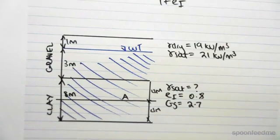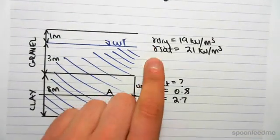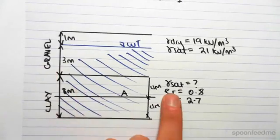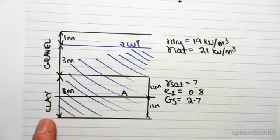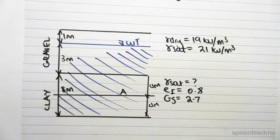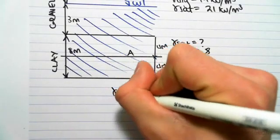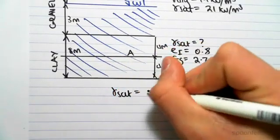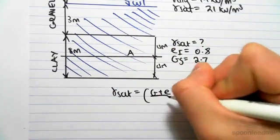You can see in the question we're giving gamma dry, gamma sat of the gravel, and we are not giving gamma sat of the clay. So the first thing we're going to have to do is work that out.